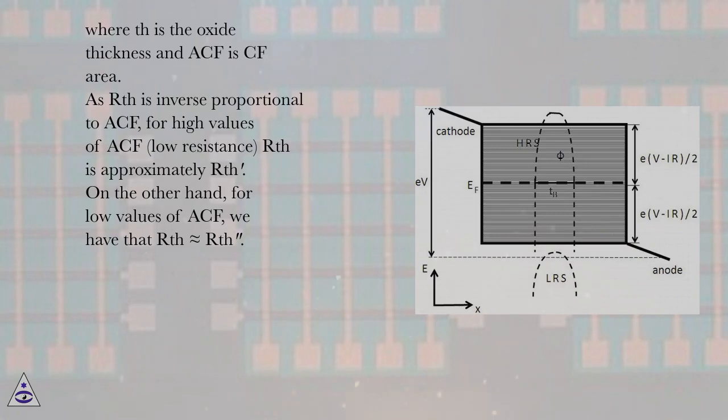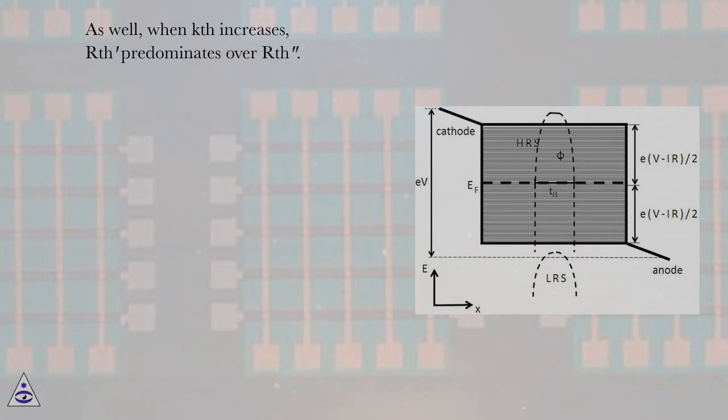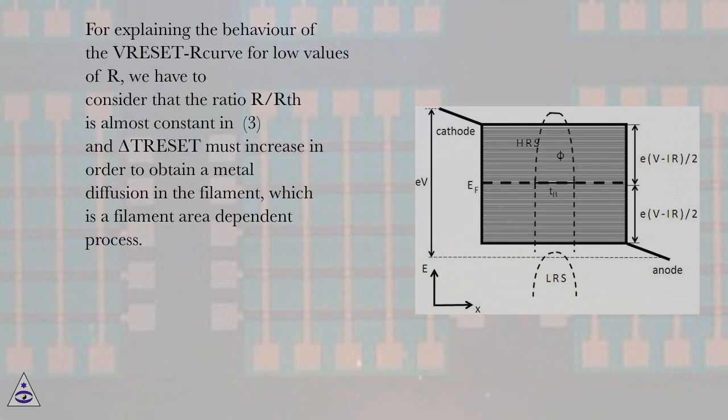On the other hand, for low values of ACF, we have that RTH equals RTHbulk. As well, when KTH increases, RTHCF predominates over RTHbulk. For explaining the behavior of the VRESET curve for low values of R, we have to consider that the ratio R/RTH is almost constant in equation 3, and delta T reset must increase in order to obtain a metal diffusion in the filament, which is a filament area-dependent process.